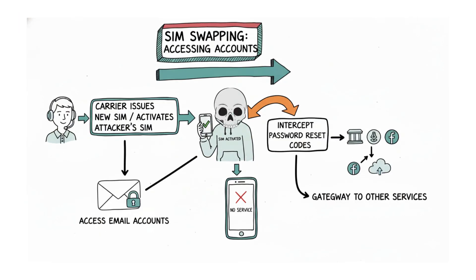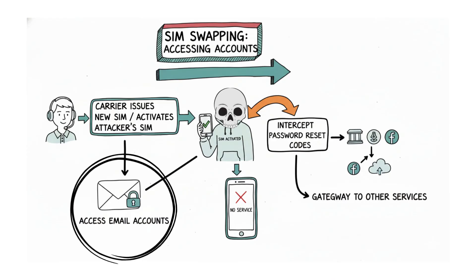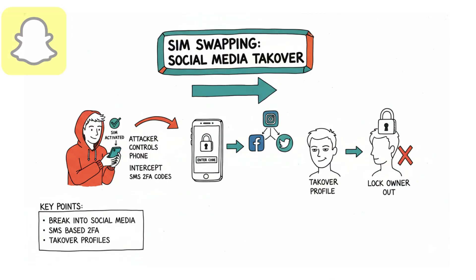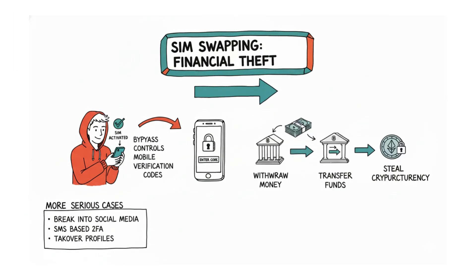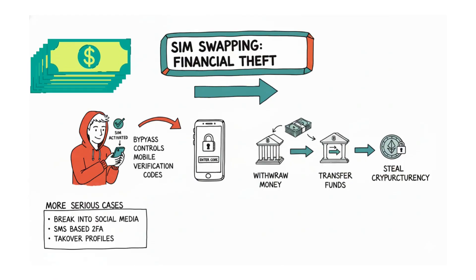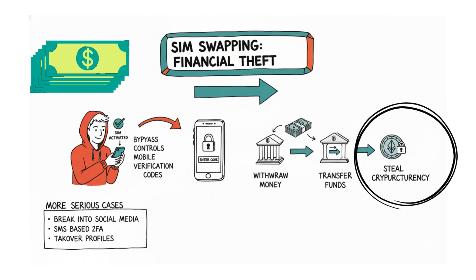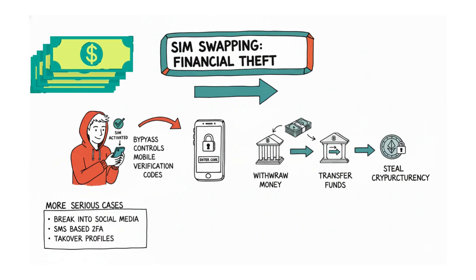Once an attacker gains control of a victim's phone number, the consequences can be severe. By intercepting password reset codes, they can access email accounts and use them as a gateway to other services. They can also break into social media accounts that rely on SMS-based two-factor authentication, taking over profiles or locking the real owner out. In more serious cases, attackers can withdraw money or transfer funds from bank accounts, as well as steal cryptocurrency by bypassing mobile verification codes.